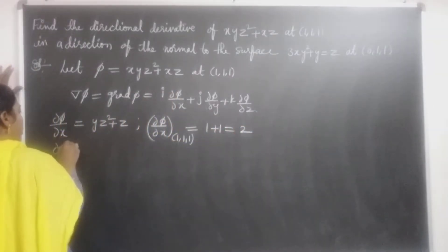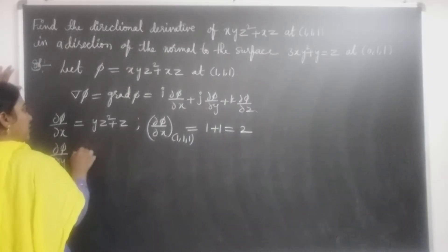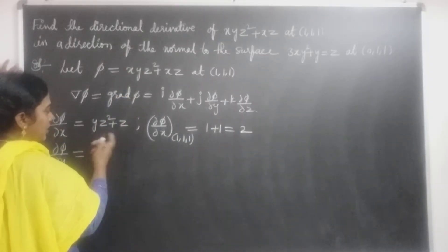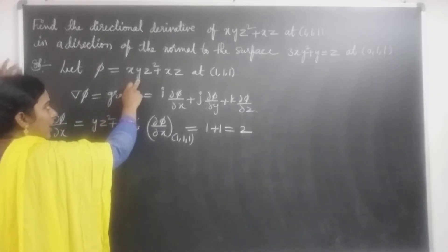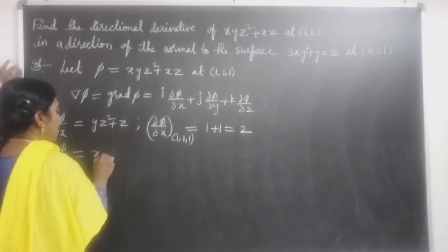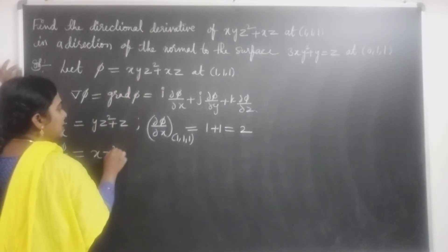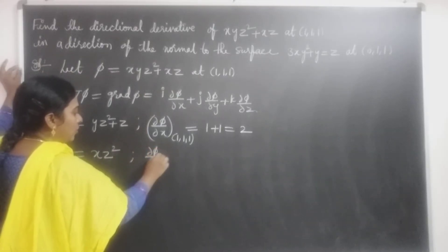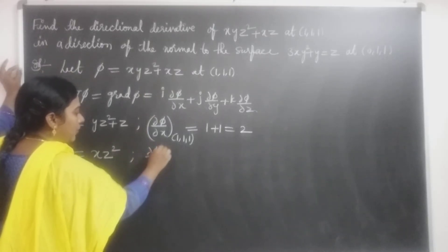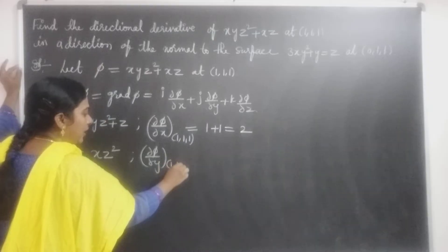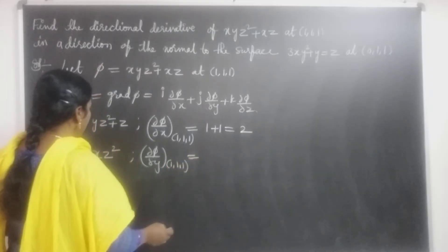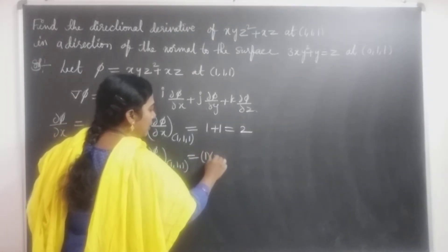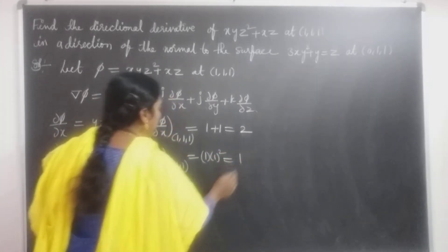Next, ∂φ/∂y: treating x and z as constants, y is the variable. The derivative of xy·z² with respect to y is xz², and the second term xz has no y, so its derivative is 0. Thus ∂φ/∂y = xz². At the point (1, 1, 1): it equals 1·1² = 1.